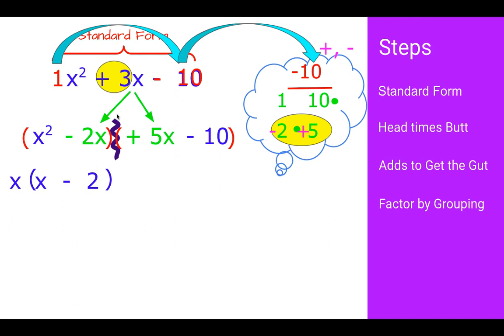If we look at 5x minus 10, they both share a 5. What's left over should be and is x minus 2, because these have to match. 5 times x is 5x, 5 times negative 2 is negative 10. Notice how the x minus 2's are the same, so we can pull that factor out. What's left over is x plus 5.